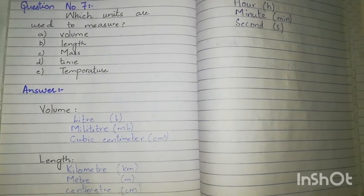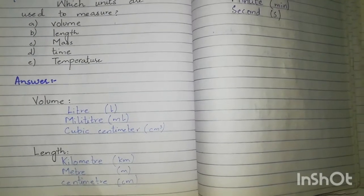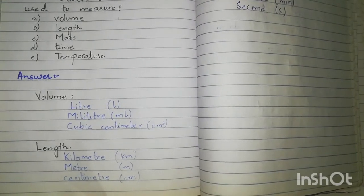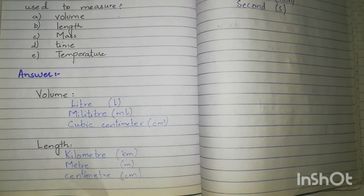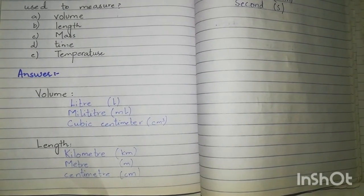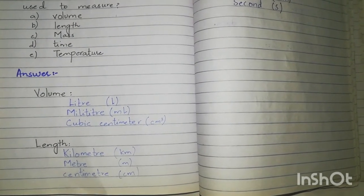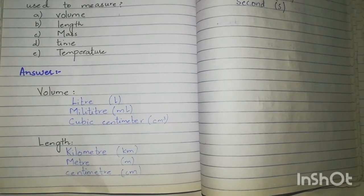Sabse pehle jho humare paas quantity hai voh hai volume. Ab volume ko measure karne ke liye hom unit use karthay hai liter, jis ko hum L se represent karthay hai, ya milliliter jis ko hum ml se represent karthay hai, ya pher cubic centimeter jis ko hum cm cube se represent karthay hai.